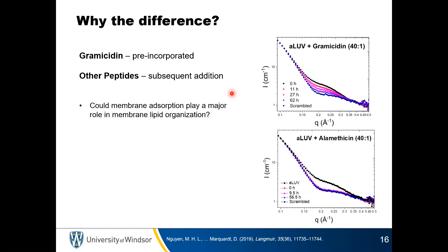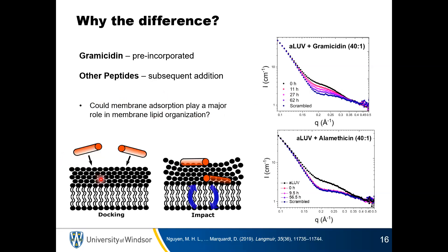We were able to demonstrate this measurement works with gramicidin — why the difference? It turns out that to handle gramicidin, you have to pre-incorporate it into the membrane before the asymmetry is actually generated, so there is no insertion step. Whereas all other peptides are added after the preparation — there has to be addition to the solution, then docking to the surface, then insertion. Based on our data, the bilayer gets scrambled during this docking/insertion step.